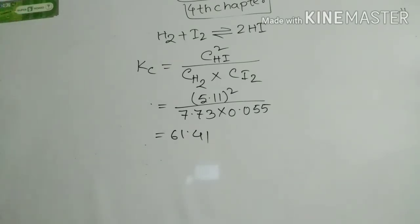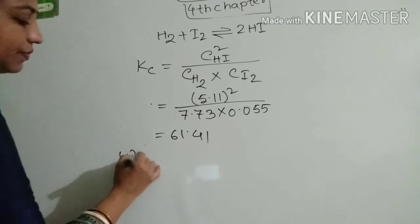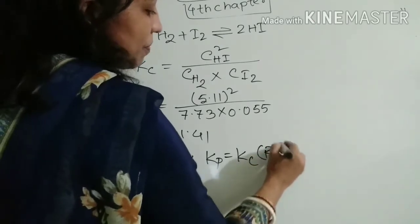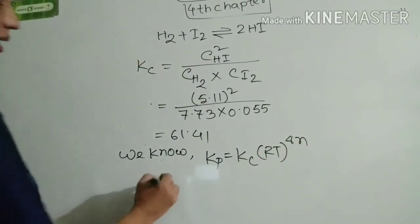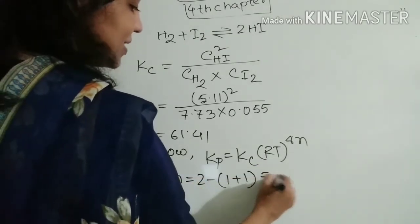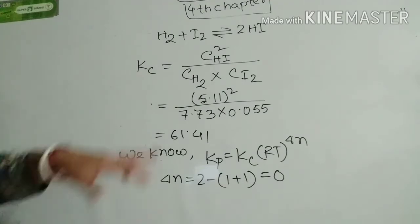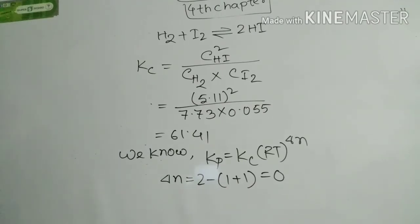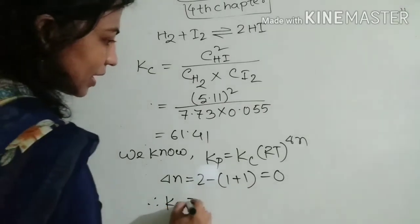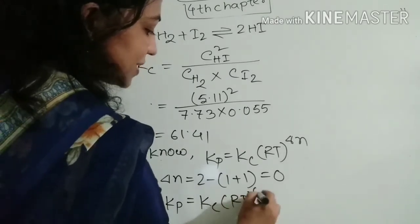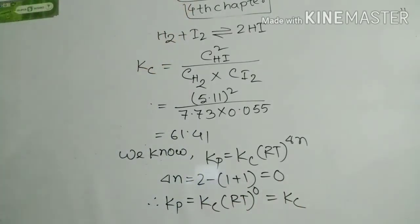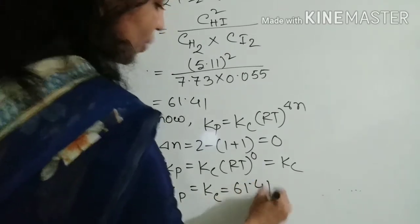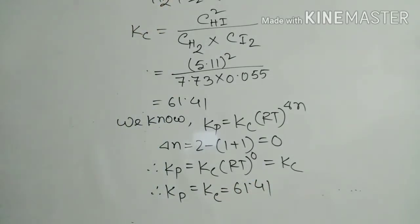The question asks for Kp. We know Kp = Kc × (RT)^ΔN. Here ΔN = 2 − (1 + 1) = 0, because there are 2 moles of product HI minus 2 moles of reactants. So Kp = Kc × (RT)⁰ = Kc = 61.41. This is the result of this math problem.